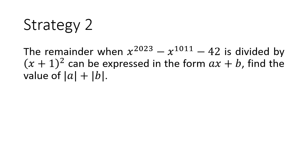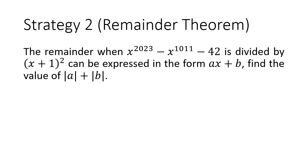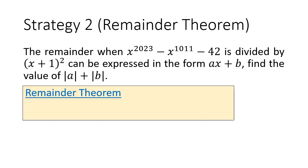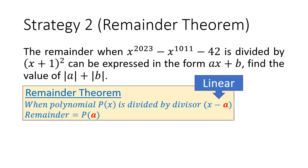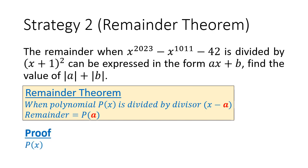Now, the alternative strategy is to consider the remainder theorem. Let's recall the remainder theorem. It states that when a polynomial px is divided by a linear divisor x minus a, the remainder will be p of a. Of course, this theorem applies to linear factors. And while it doesn't work in our case, we can draw some inspiration from its proof. And the proof is as follows.